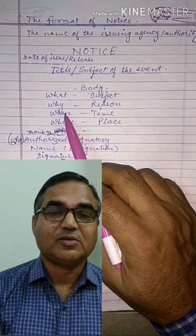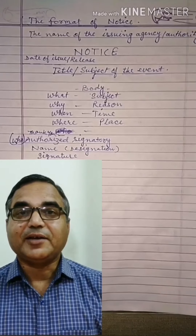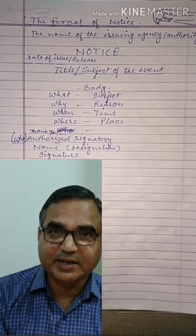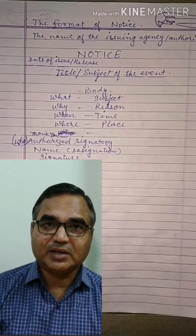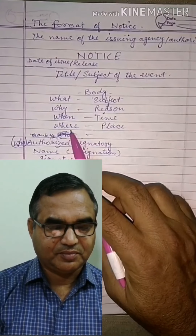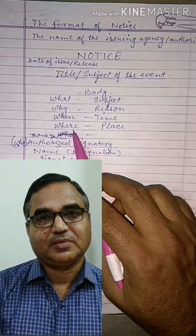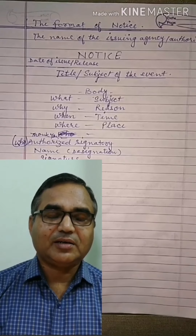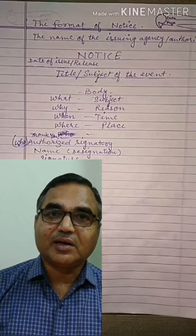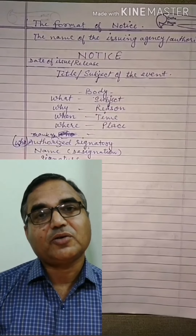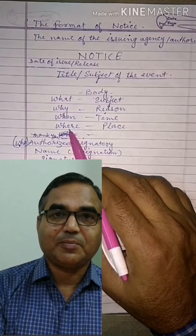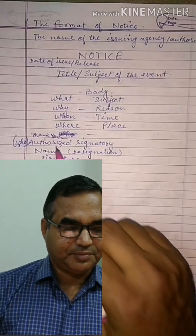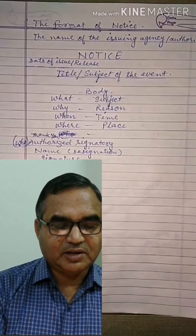You are to ask the question WHEN to yourself — this will give you the time: first the date, and secondly the timing and duration of that event. After that, ask WHERE to yourself — that will give you the place from the question. You have to write down the place after or below the time. In this way, this content will be completed.